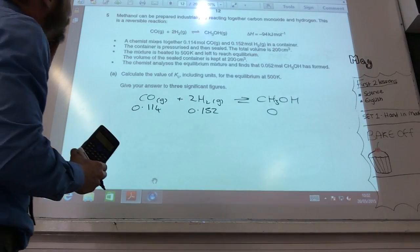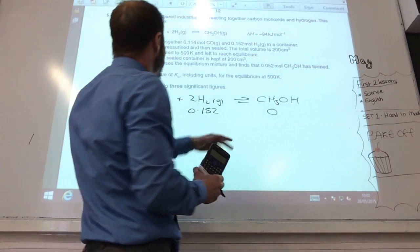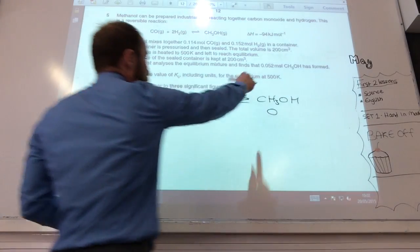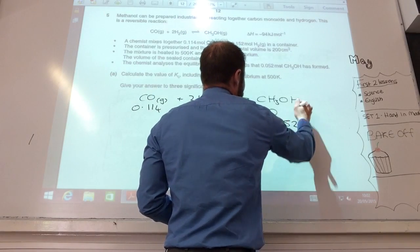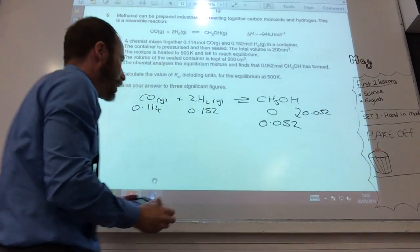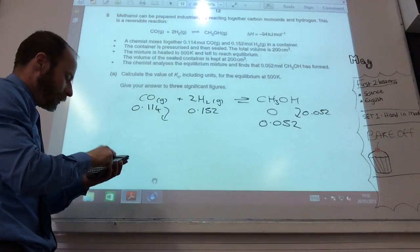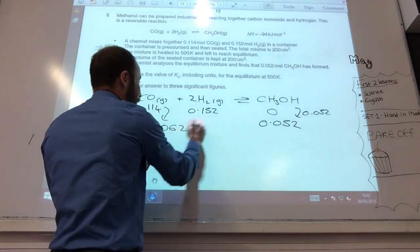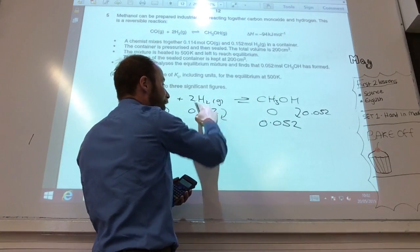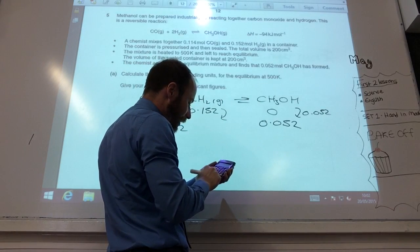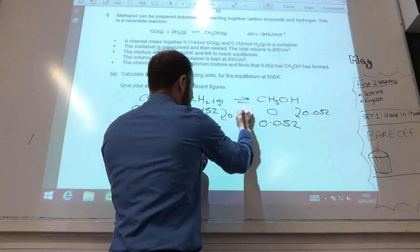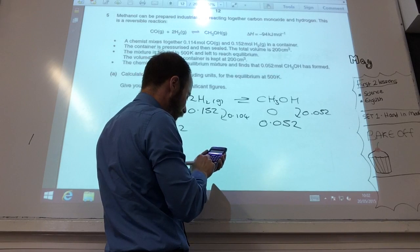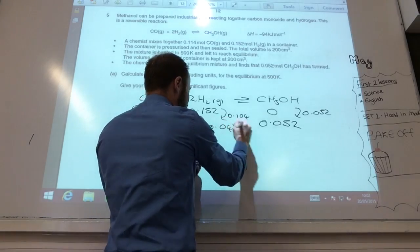Right, so this one, relatively straightforward, probably, as far as equilibrium goes. I mix this and this together, total volume is okay, analyze it. So, what am I left with at the end? I'm left with 0.052 moles of that. So, that has gone up by 0.052 moles. So, that, because it's 1 to 1, must have gone down. So that means that's 0.062. Now, key thing, for every one of those, you need two of those. So, that's gone down by 0.052 times 2, so that must have gone down by 0.104.